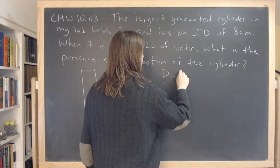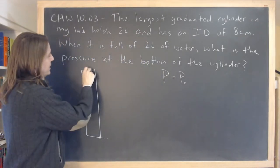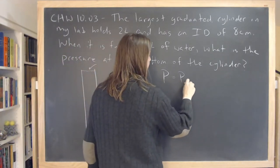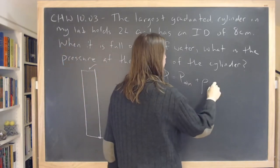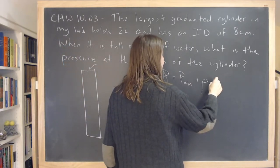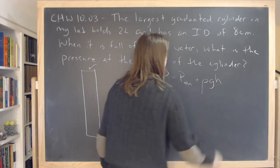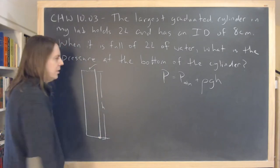Pressure there is whatever pressure is on top, P-naught, or in this case, the pressure at the top is atmospheric pressure, P-atmospheric plus ρgh. The density of the fluid times gravity, acceleration of gravity times the height of the column. So here is the height of the column.